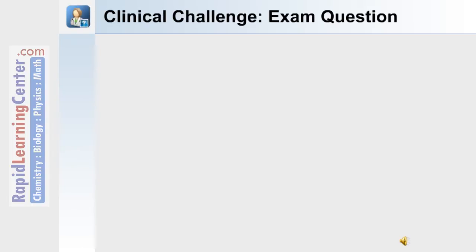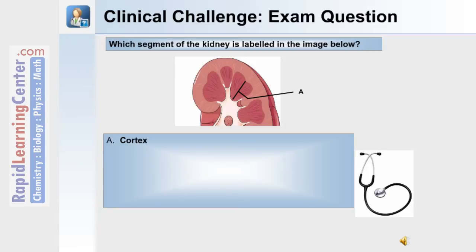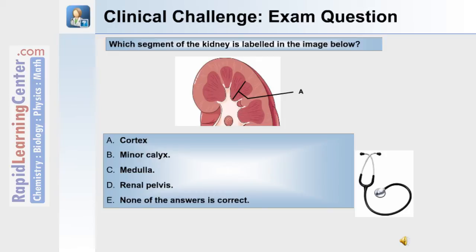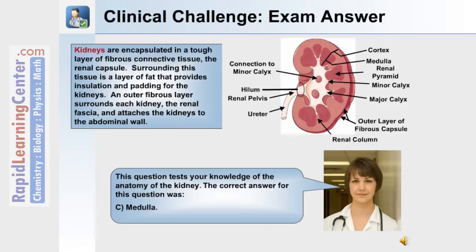Here's a clinical challenge exam question based on what you've learned so far in this tutorial. Which segment of the kidney is labeled in the image below? Is it A, the cortex; B, the minor calyx; C, the medulla; D, the renal pelvis; or E, none of the answers is correct? The correct answer is C — the medulla was labeled in the image.